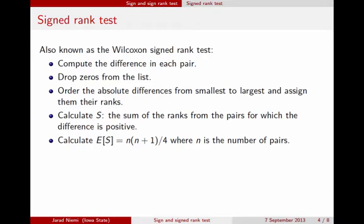So the expected value happens to be this number right here, n times n plus 1 over 4, where n is the number of observations that we have, pairs of observations that we have. So I should say n is the number of trees that we have in this dataset.